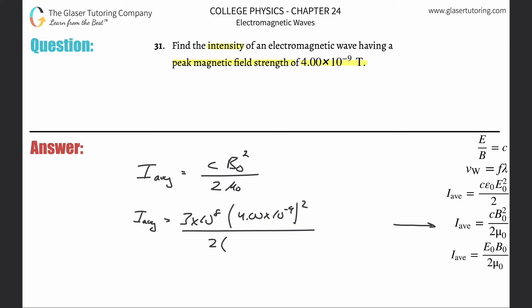the permeability of free space, so this is going to be 4π times 10 to the minus seventh.